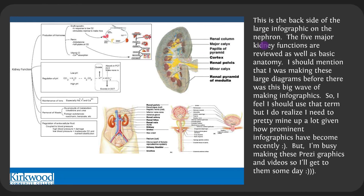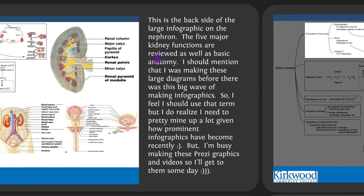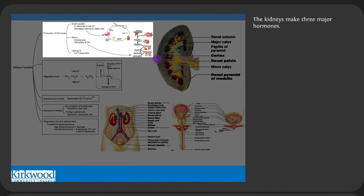This is the backside of the large infographic on the nephron. The five major kidney functions are reviewed as well as basic kidney anatomy. The kidneys make three major hormones: EPO (erythropoietin) is released by the kidney when it senses decreased oxygen-carrying capacity, sending a signal to the bone marrow to make more red blood cells. Vitamin D is made by the skin but is not in its active form until it goes through the kidney, where it increases calcium concentration.